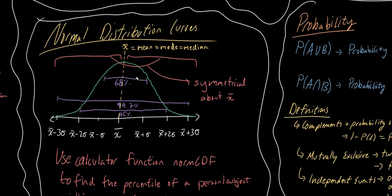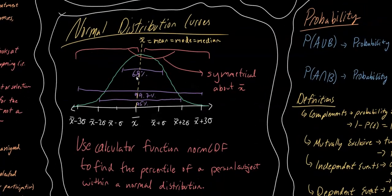The first thing we're going to need to learn is what a normal distribution curve looks like. A normal distribution is symmetrical, and 68% of the data is within one standard deviation, plus or minus one standard deviation from the mean. 95% is within 2, and 99.7% is within 3.